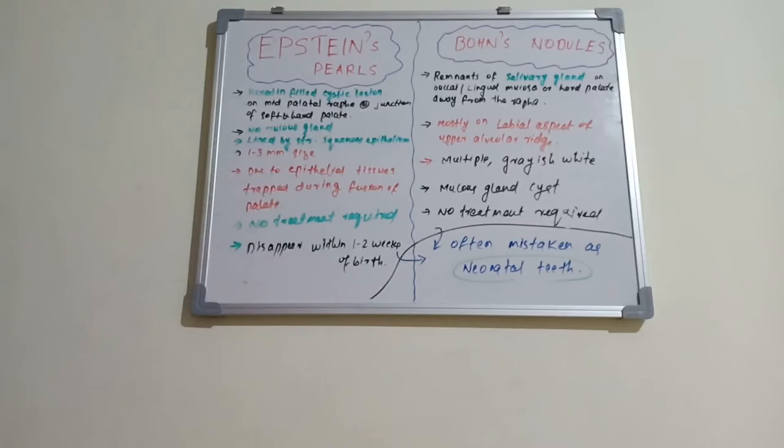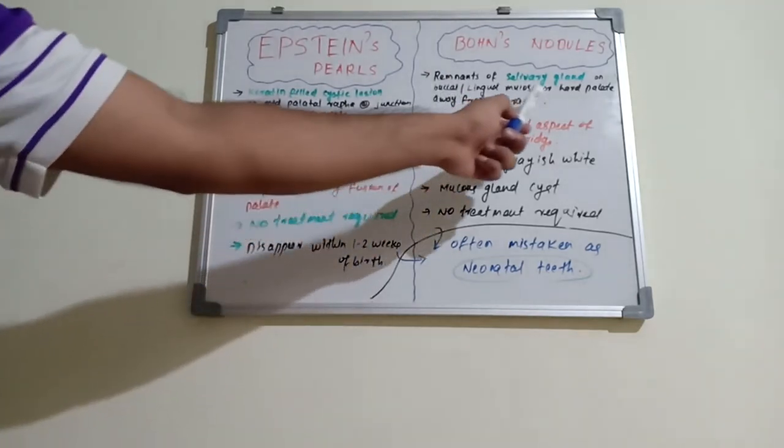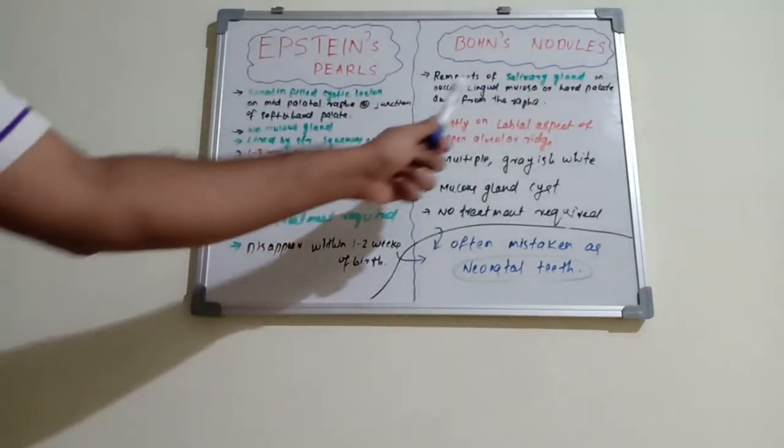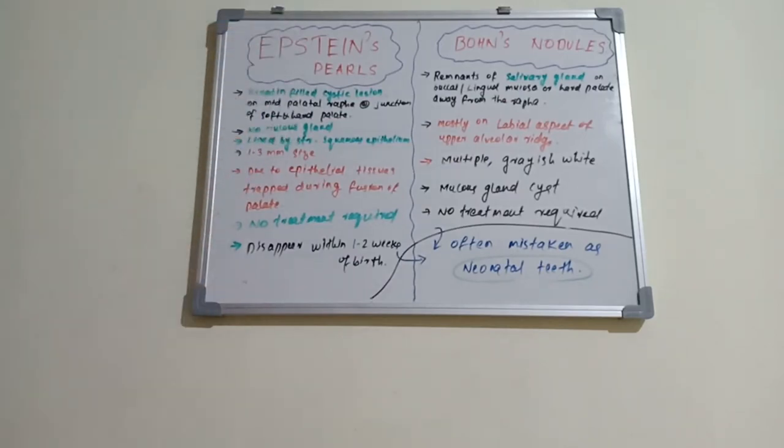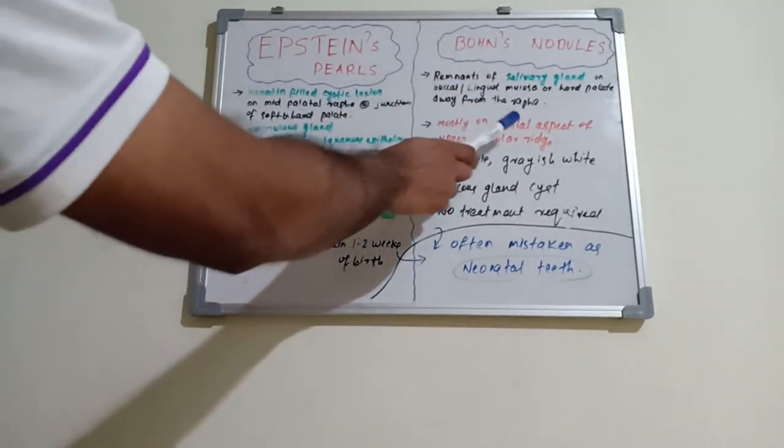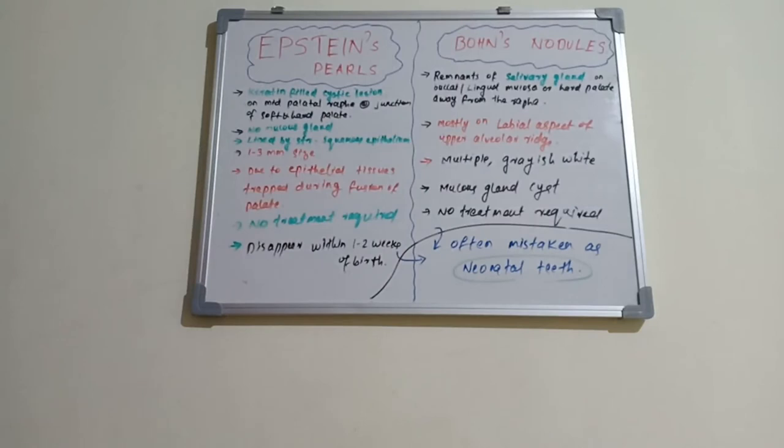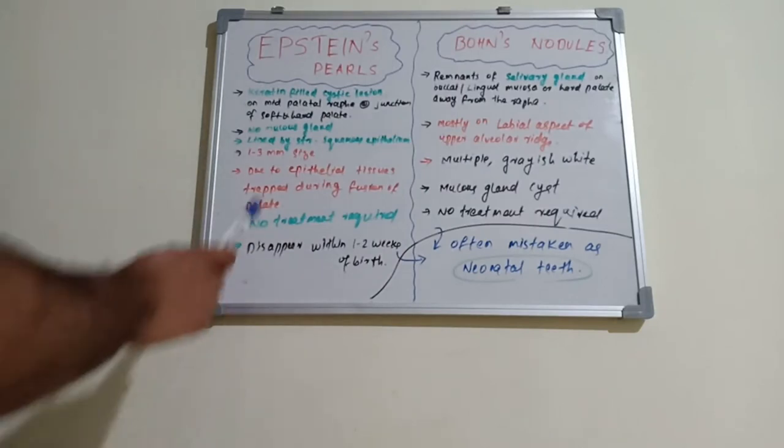Whereas Bohn's nodules are remnants of salivary gland on buccal and lingual mucosa or hard palate away from the raphe. Epstein pearls are exactly at the midline raphe. This is away from the raphe but seen on buccal and lingual mucosa and mostly seen on the labial aspect of upper alveolar ridge.